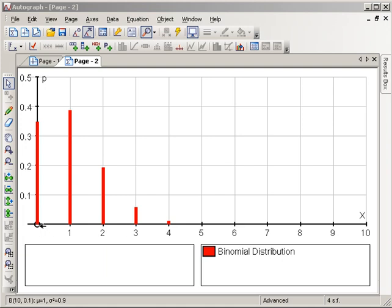From the graph, you can see that the probability that you have no success, or one, or two, or three, or four successes, is fairly reasonable.